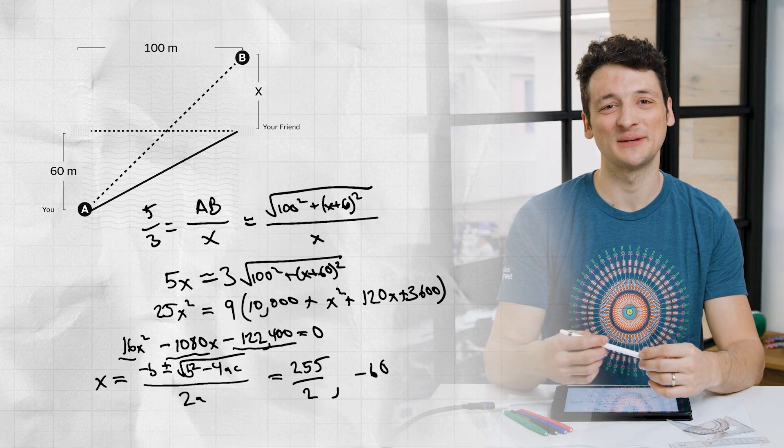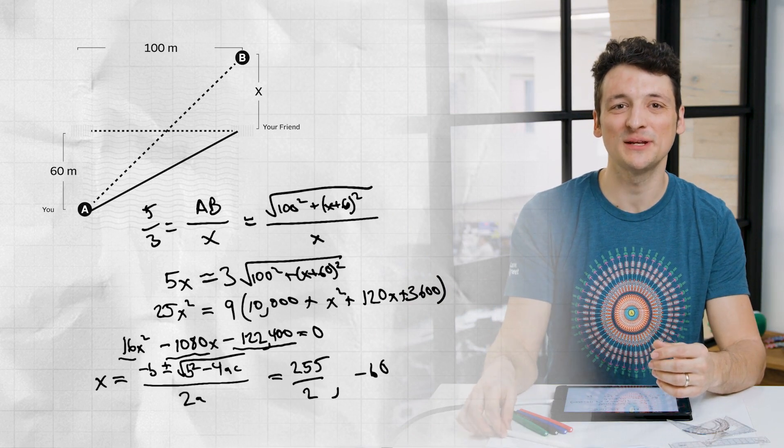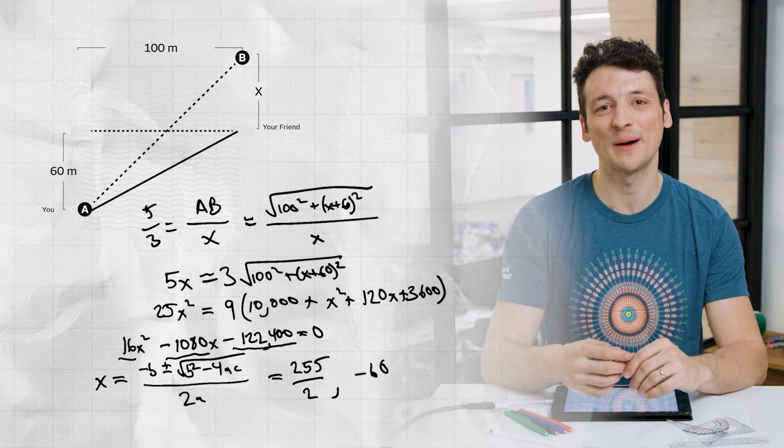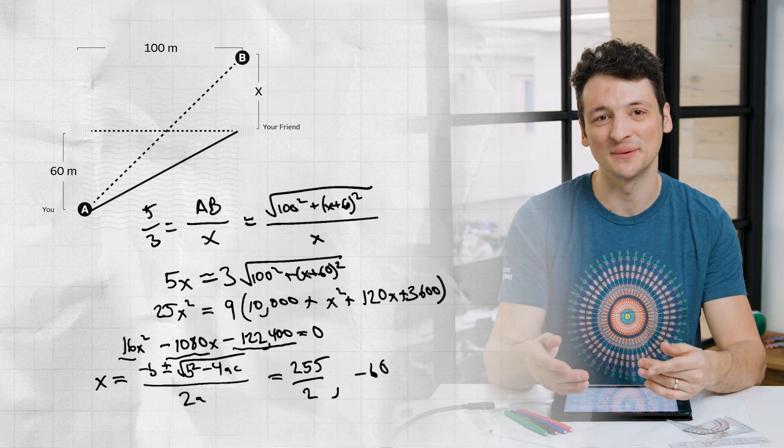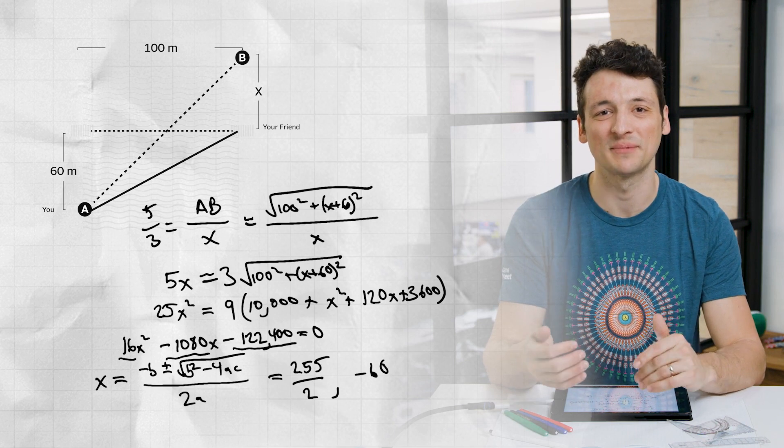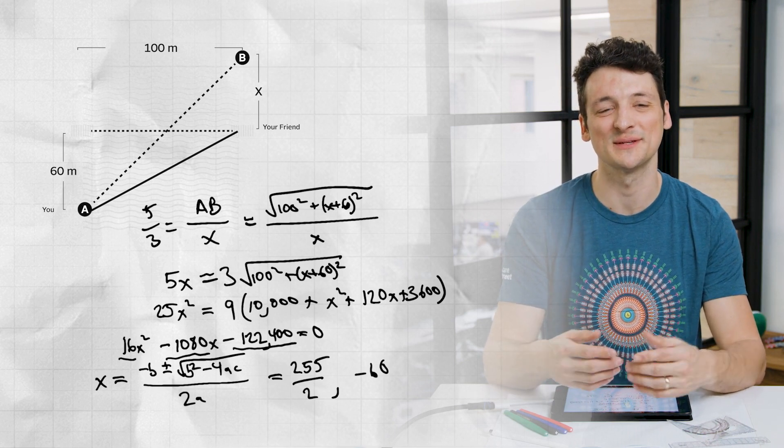We can throw away the x equals negative 60 solution because we know that our answer is positive. However, it's instructive to figure out why that nonsense solution appears. I'll leave that to the viewer with the hint that it has to do with the step of squaring both sides that we use to solve.